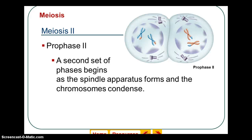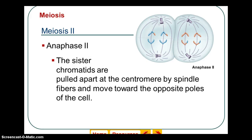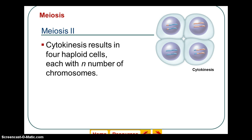Now we do it again — meiosis 2. Prophase 2, just like prophase from mitosis. Metaphase 2: chromosomes line up along the middle. Anaphase 2: chromosomes are pulled apart, very similar to mitosis. Telophase 2: new nuclei form. Then a second round of cytokinesis. Now you have four new haploid cells.